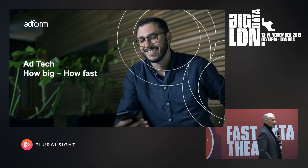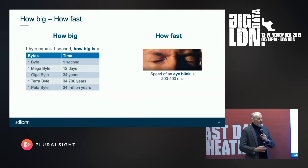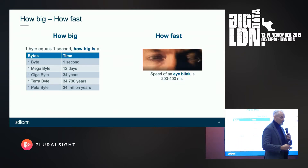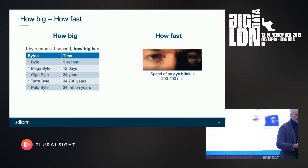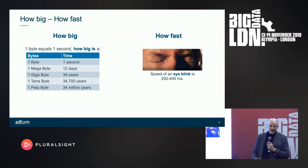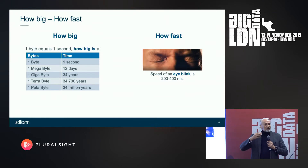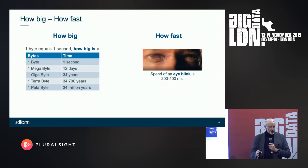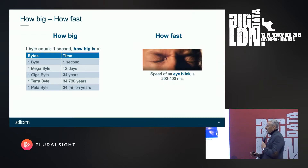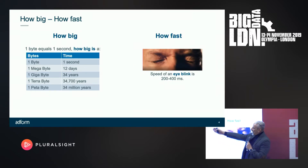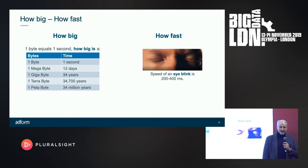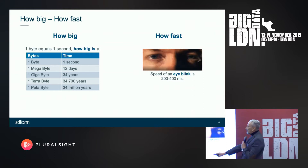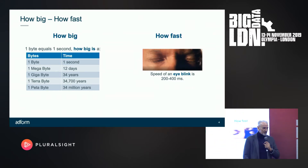So how big and how fast is ad tech? When you talk to your mother about what you do, how do you explain it? There's a generational gap — it's a concept people don't understand. So you want to give people a frame of reference. If we talk about bytes, and we said one byte is equal to one second, a petabyte is 34 million years.